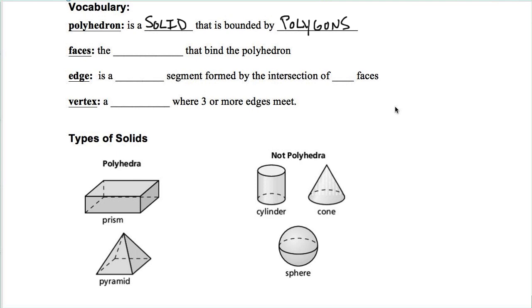Faces - a face is the polygon that bind the polyhedron together. More often than not, these are usually going to be rectangles.